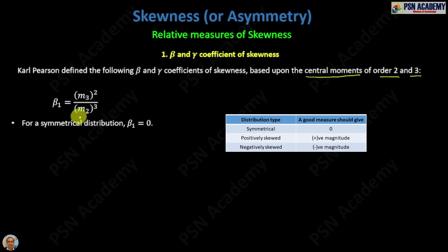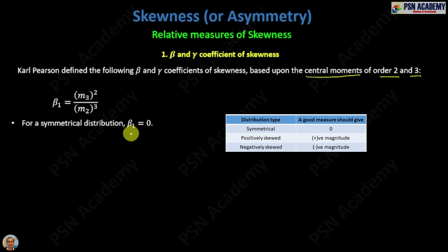According to our criteria for a good measure of skewness: it should give zero for a symmetrical distribution, a positive value for a positively skewed distribution, and a negative value for a negatively skewed distribution. For a symmetrical distribution, this beta one formula will give you zero, so it is performing properly according to the criteria.